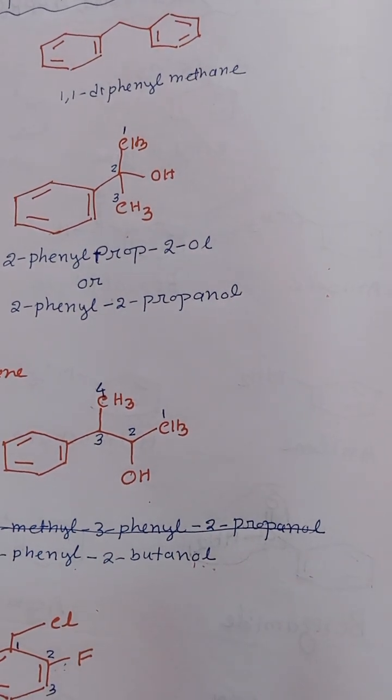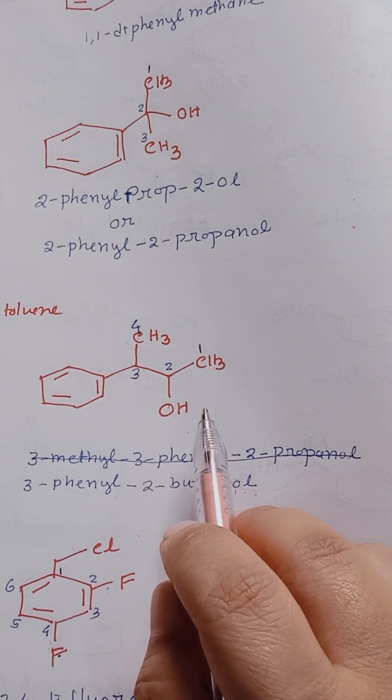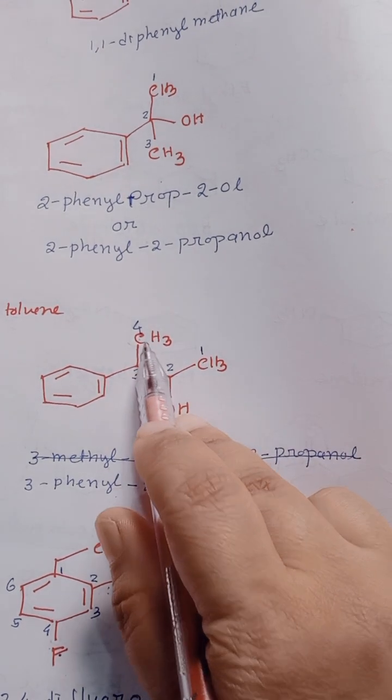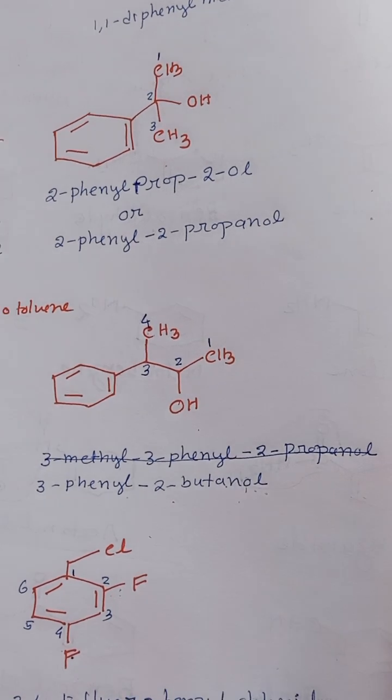Next compound: here again OH is present, so OH will get the first priority. So 1, 2, 3, 4. 3-position phenyl. So we can write 3-phenyl-2-butanol.